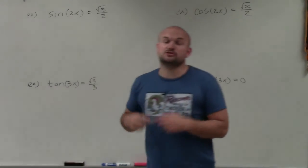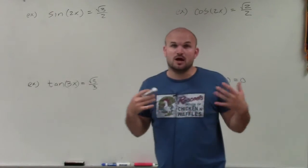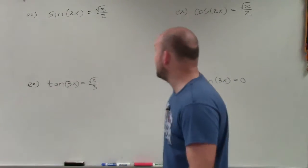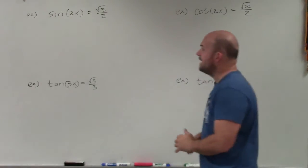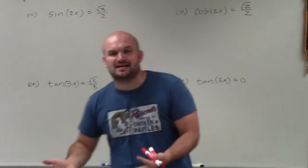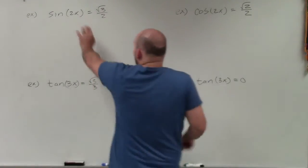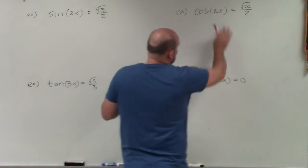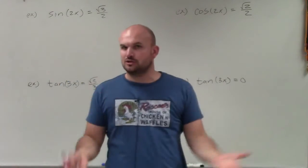Welcome, ladies and gentlemen. What I'd like to do is show you how to solve a trigonometric equation with multiple angles. What you can see here is we have trigonometric sine, cosine, and tangents. But now we have something a little bit different — instead of taking the sine, cosine, or tangent of a single angle, we now have multiple angles: 2x, 3x, 3x, 2x. So how is that going to affect our solutions?